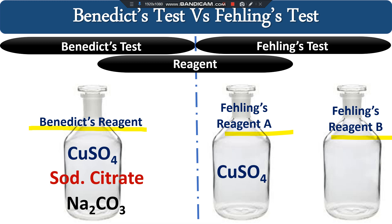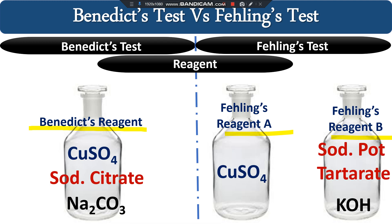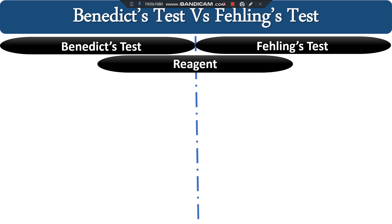Fehling's reagent A contains only copper sulphate, whereas Fehling's reagent B contains sodium potassium tartrate, also called Rochelle salt, and KOH. KOH provides the alkaline conditions in the Fehling test. In the Benedict test, the alkaline condition is provided by sodium carbonate. Comparing the alkali strength: sodium carbonate is a weak alkali, whereas potassium hydroxide or sodium hydroxide is a strong alkali.